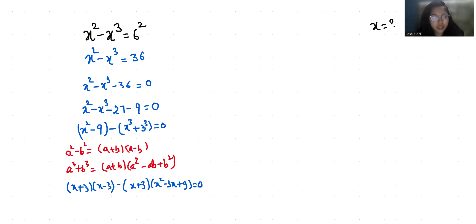If I take x plus 3 as common, then x minus 3 minus x squared plus 3x minus 9 equals 0.